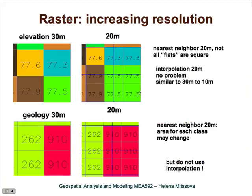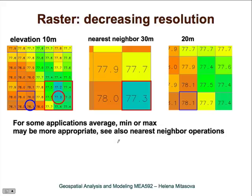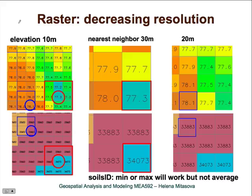It can get complicated, and I'll let you study these examples by yourself. The main reason I included this example is to point out that depending on the original and target resolution, you can get a change in area. For example, when computing area for different geological maps, resampling can increase the area of class 910 and decrease the area of class 262. This illustrates the rules used for decreasing raster resolution, and again, the procedure differs for continuous versus discrete data.